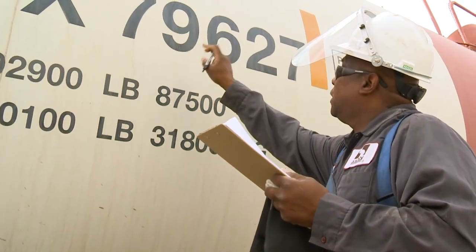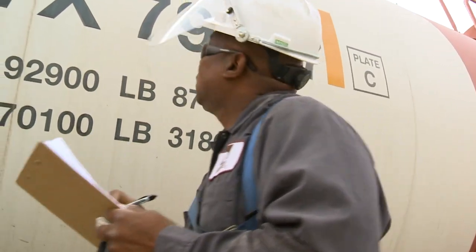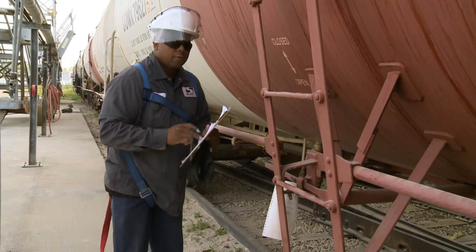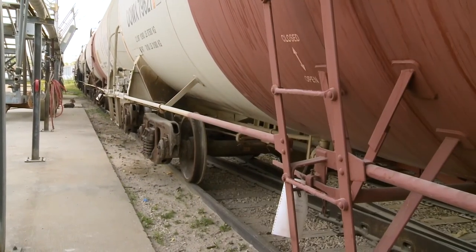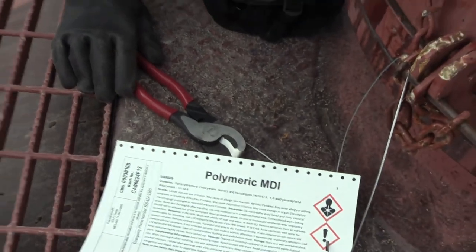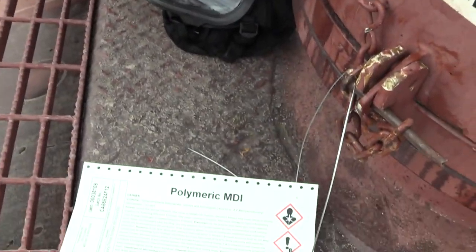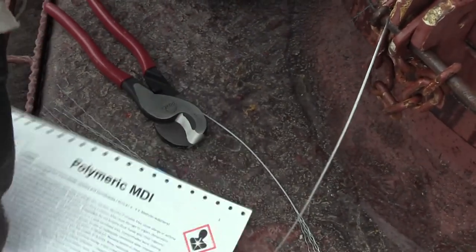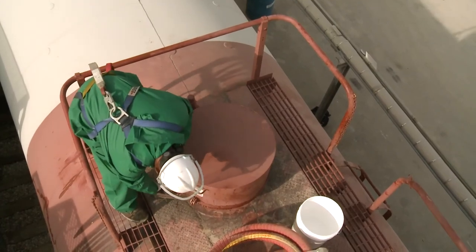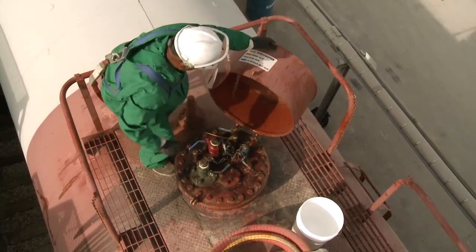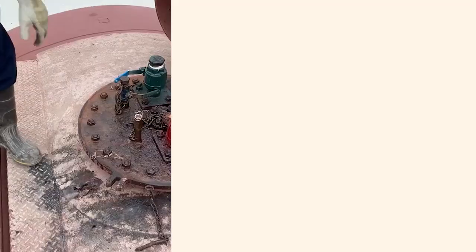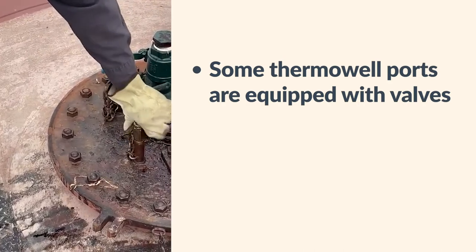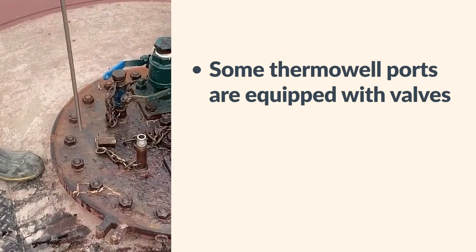Compare the tank car number against the number identified on the shipping documents. Check the tank car to make sure the numbers on the security seals match the seal numbers shown on the paperwork. Also confirm that the security seals are not broken and have not been tampered with in any manner. You will need to break the seal on the valve cover hatch. Remove the securement pin and open the hatch to verify product temperature and pad pressure. Carefully remove the closure cap from the thermowell tube. If the car is equipped with a valve on the thermowell tube, carefully open the valve.